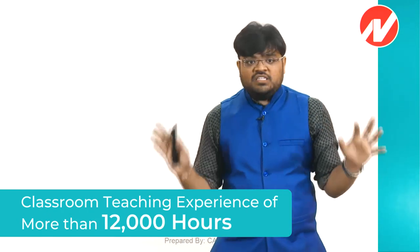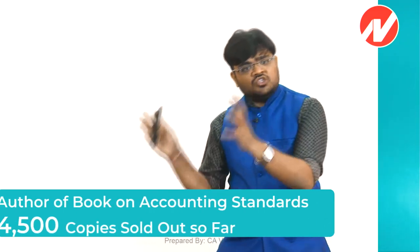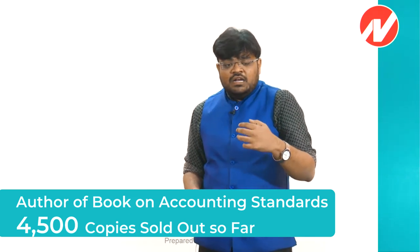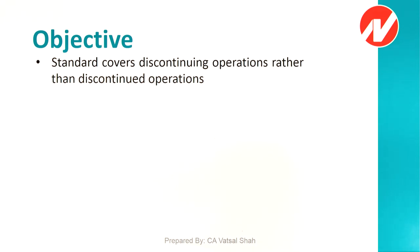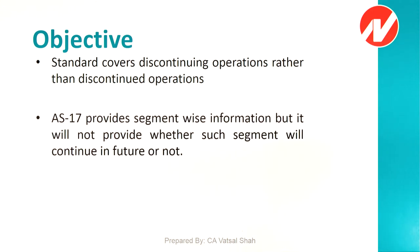We have AS-17 which deals with segment reporting. AS-17 just provides segment-wise information — for example, Nestle's profit segment by segment. But AS-17 will not provide whether a particular segment will continue in the future or not. There is a stakeholder who needs to know: if a company has a particular business operation, what will be the impact on financial performance, financial position, and cash flow? That is the simple objective of AS-24.